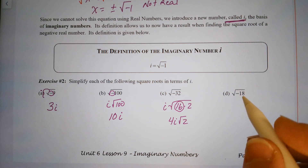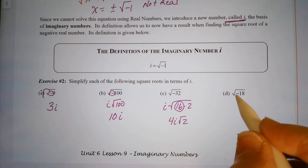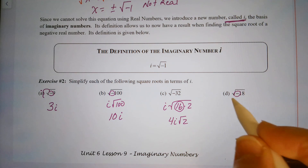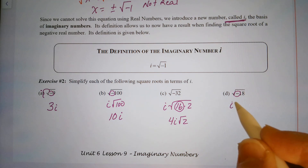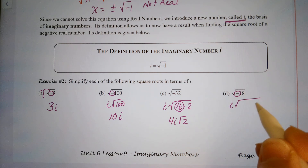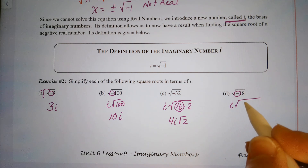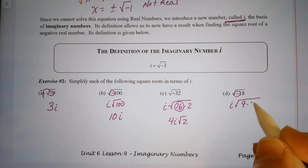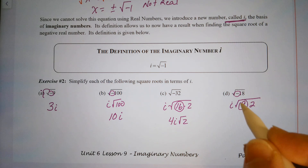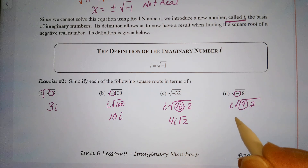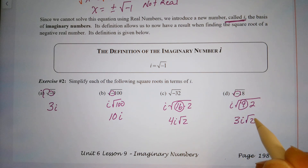For the square root of negative 18: the negative comes out as i, and 18 is 9 times 2. The square root of 9 is 3, so the answer is 3i square root of 2.